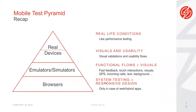Here's a recap of the mobile testing pyramid. At the very bottom, we use browsers for system testing and responsive design. For emulators and simulators, we do functional flows and visual testing. And at the top of the pyramid, we do visuals, usability, and real-life condition testing like performance testing on real devices.